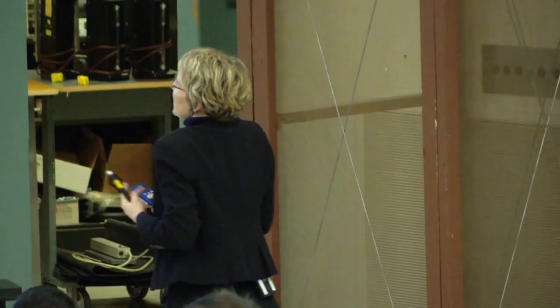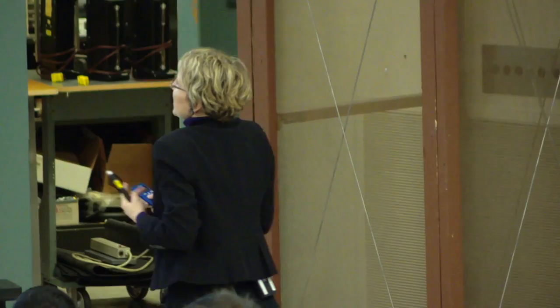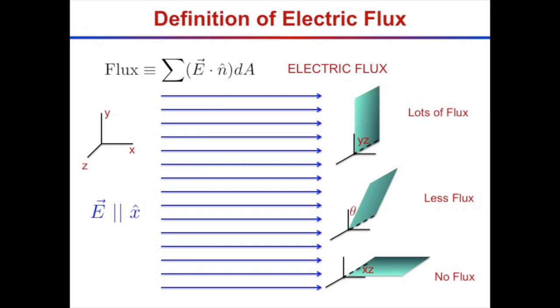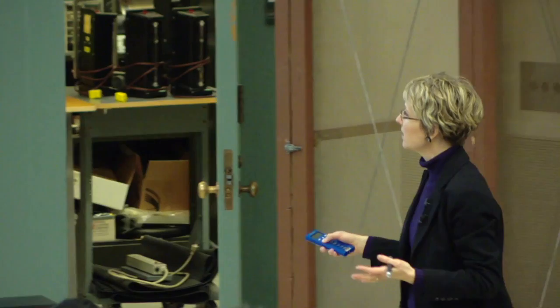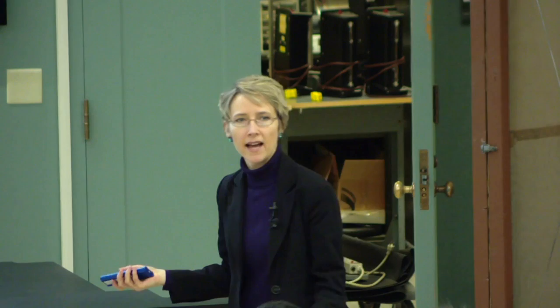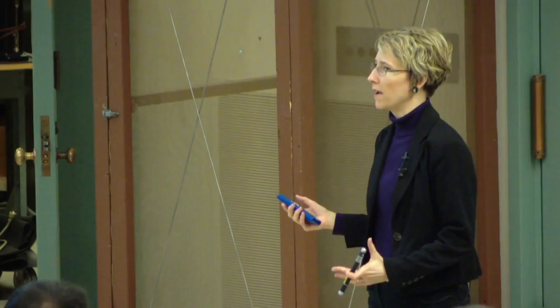What does this mathematically mean in these three cases? First, where I have an area perpendicular to the flow — think of a net perpendicular to the flow — I should catch a lot of water, so I'll get lots of flux because E dotted into that normal n gives the full contribution. In the second case, the electric field is flowing past my net but I'm not catching any because it's flowing over it. E dot n-hat equals zero because n is perpendicular to the electric field. In the tilted case, I get an intermediate amount of flux.